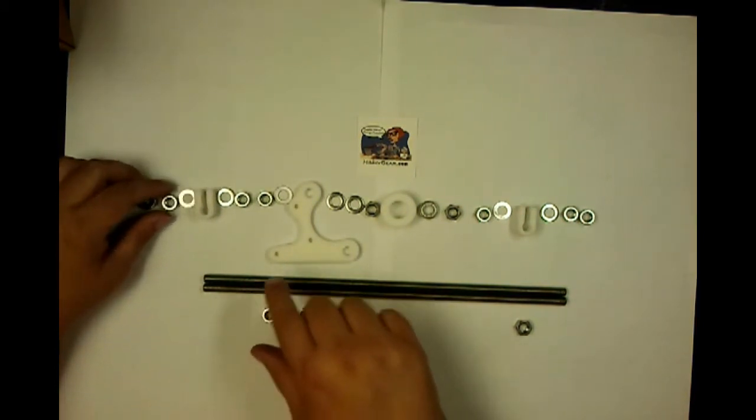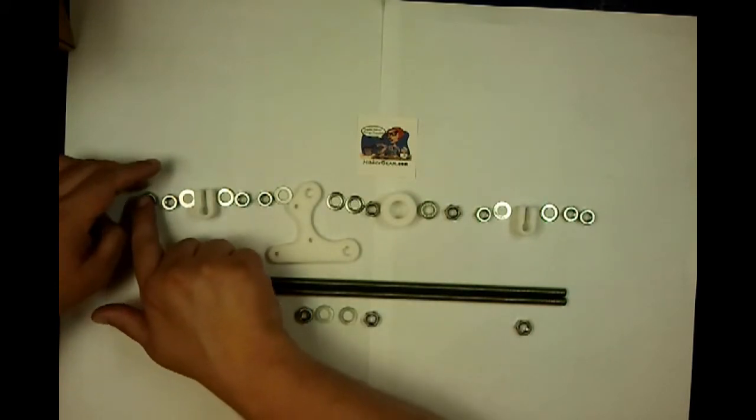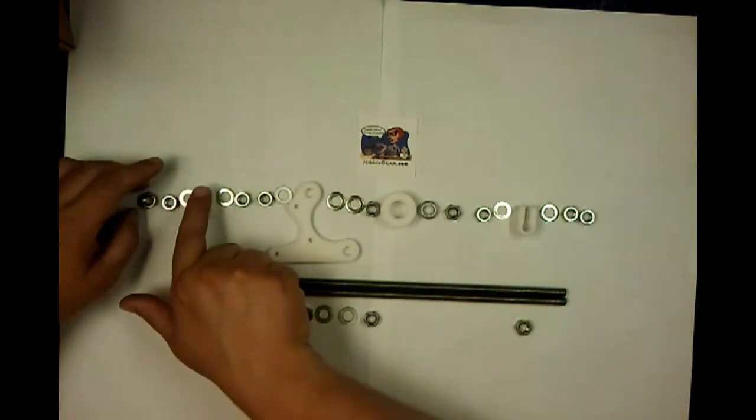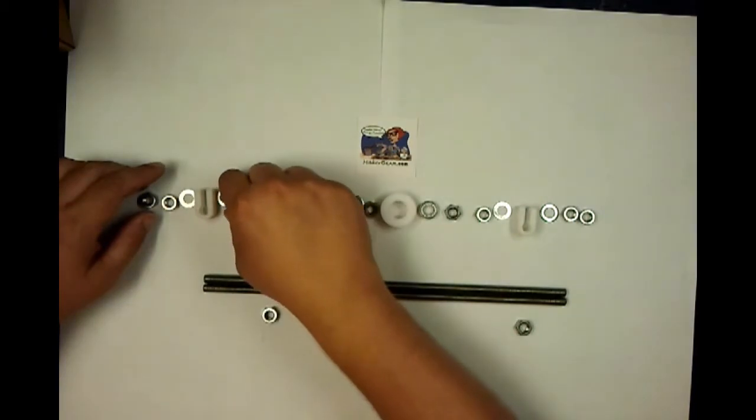What you're going to want for the order on these rods is a nut, nut, and then a washer, your clamp, a nut, or a washer, and then a nut.